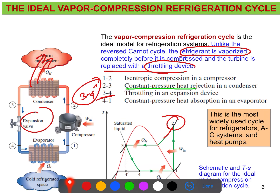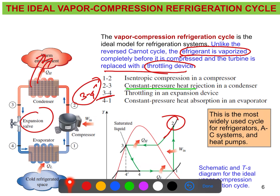At state 4, the refrigerant enters the evaporator, where it absorbs heat from the cold refrigerant space — the low temperature source. It gains heat, vaporizes the refrigerant, and returns to state 1 as saturated vapor, completing the cycle. This is the ideal vapor compression refrigeration cycle.